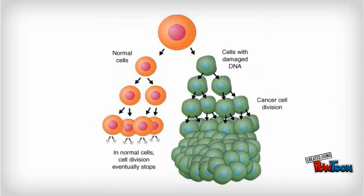In abnormal cell division, genes that tell the cell to stop dividing are mutated or harmed, and cells divide uncontrollably. These cells are called tumour cells, and they can invade healthy cells in the body. This is what causes cancer.